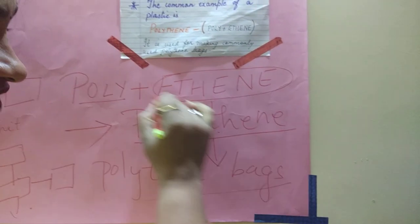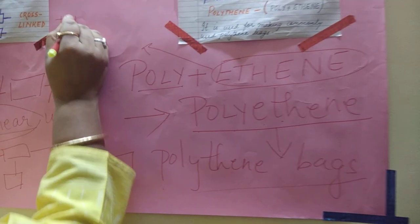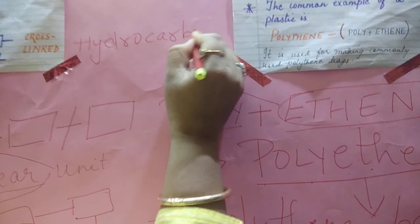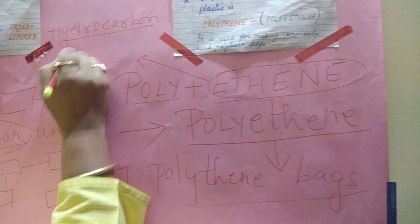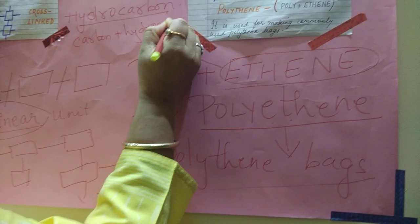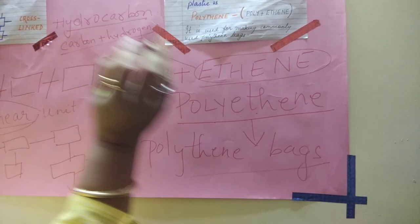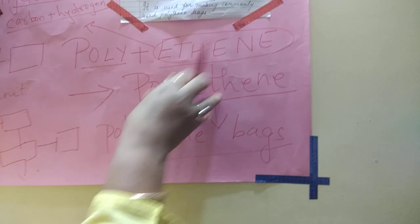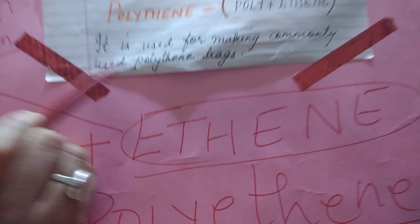Ethene is a hydrocarbon. When you reach standard 10, you will understand this word better. Ethene is made from carbon and hydrogen — that is why it is called a hydrocarbon. So ethene combined with 'poly' gives us polyethene, which is commonly used to make polyethene bags.